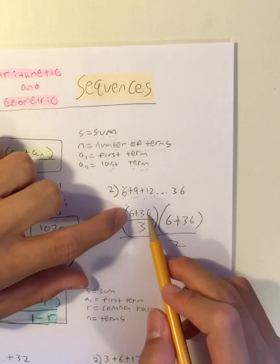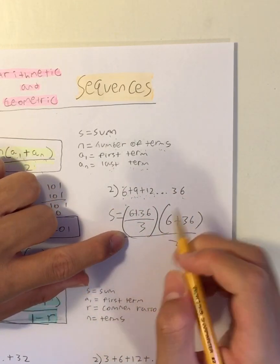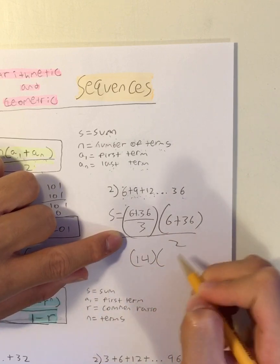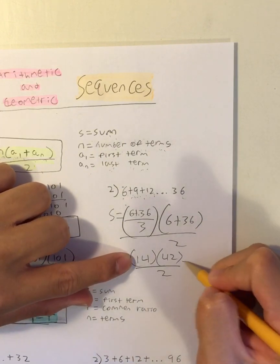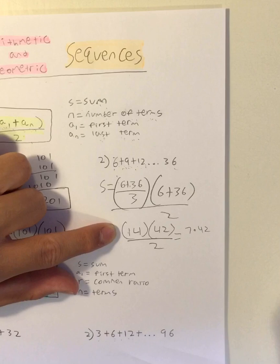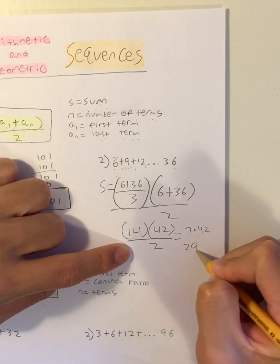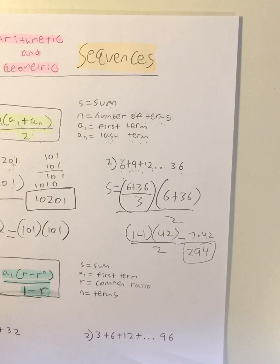Times the first term, which is 6, plus the last term, which is 36, everything over 2. Let's simplify: 6 plus 36 is 42. 42 divided by 3 is 14. That's 14 times 42 divided by 2. You can simplify this to 7 times 42 because 14 divided by 2 is 7. And 7 times 42 is 294. Boom, that's how you find the sum of an arithmetic sequence.